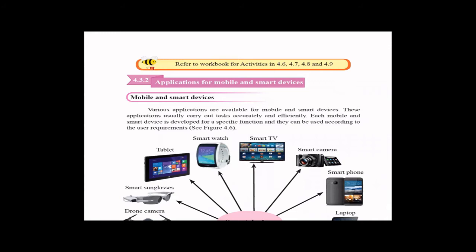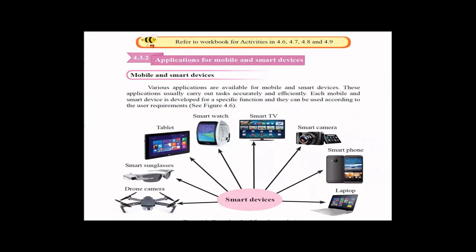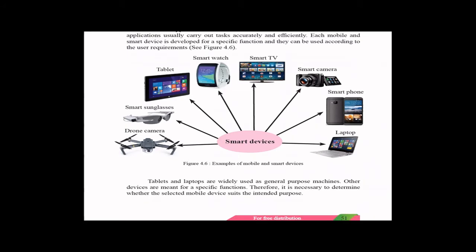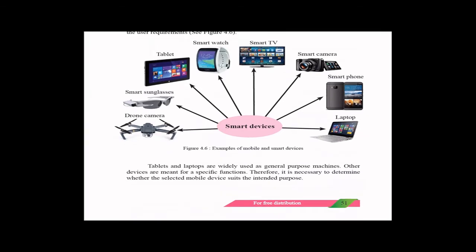There are so many devices. When it comes to mobile and smart devices, there are so many applications available for them to make our tasks very accurate. As they have shown you here, there are laptops, smartphones, smart cameras, smart TVs, drone cameras, tablets, smartwatches. When it comes to tablets and laptops, they are usually for general purpose. But when it comes to other devices like smart sunglasses and drone cameras, they have some kind of a specific or intended purpose to be achieved from them.